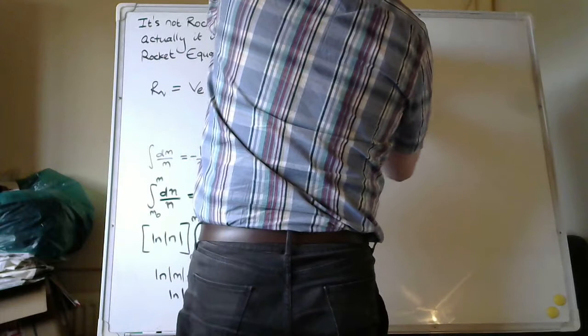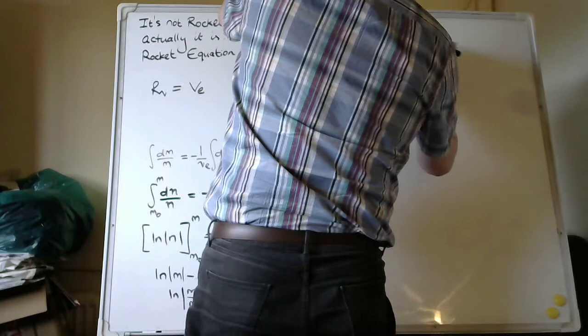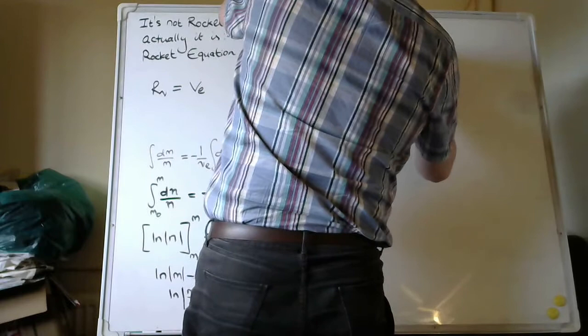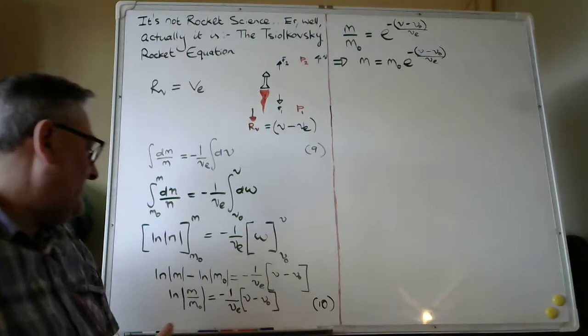Okay, so we can multiply both sides by M nought. M equals M nought or M sub zero equals e to the minus V minus V nought all divided by VE. Right, so we've got this equation here which we will call equation eleven.